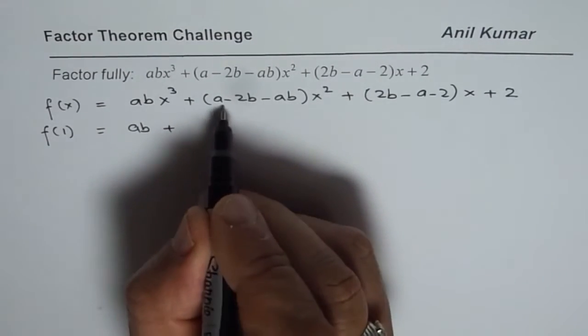We bring down the next term, (2b − a − 2)x. We now multiply by (a − 2b), giving (a − 2b)x² − (a − 2b)x. Subtracting, the x² term becomes 0. The 2b and −2b cancel, and −a and +a cancel, leaving us with −2x.